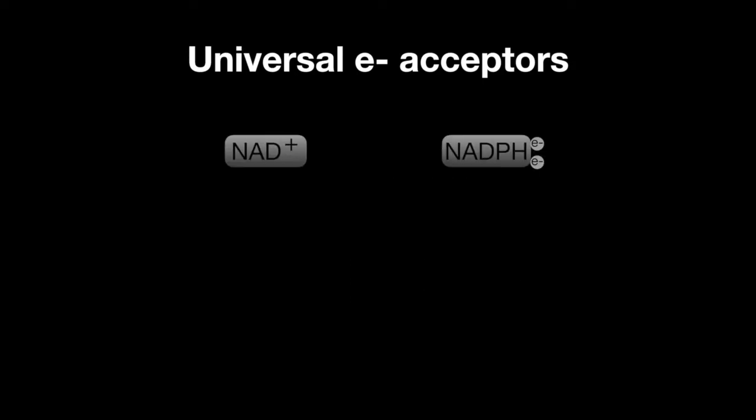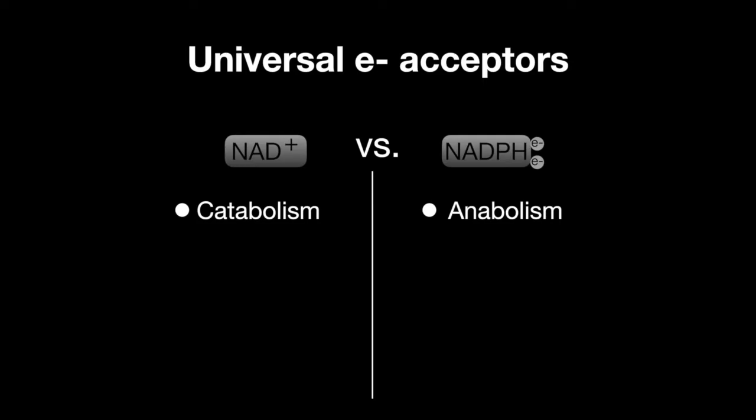NAD+ and NADPH differ in that NAD+ is normally used in catabolism to capture energy in its reduced form NADH, whereas NADPH is used to build molecules in anabolic processes, supplying electrons for processes such as steroid and fatty acid synthesis.